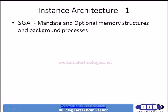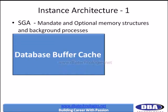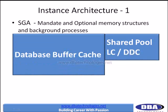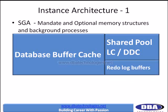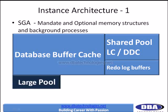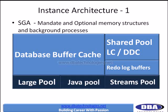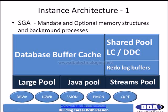So, as discussed, mandatory and optional memory structures along with background processes make up our Oracle instance. Memory structures include: database buffer cache, shared pool (containing library cache and data dictionary cache), and redo log buffers — all in memory. Optional ones: large pool, Java pool, and streams pool. Background processes include: DBWriter, LogWriter, SMON, PMON, Checkpoint, and Recoverer. This complete picture describes an Oracle instance.